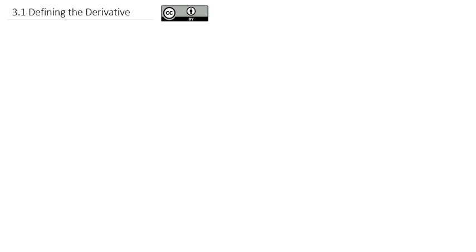Chapter 3 is going to be all about the derivative. To start off, we really need to know what the derivative is. Specifically, when we say the derivative, what we're talking about is the slope of a tangent line to a function.